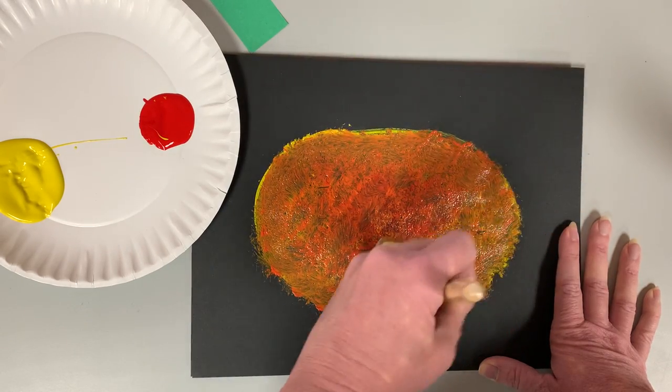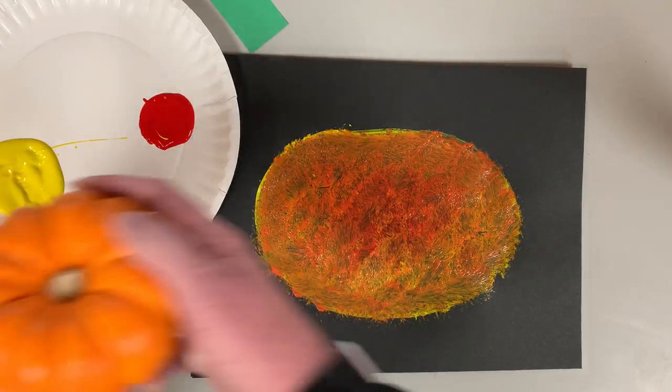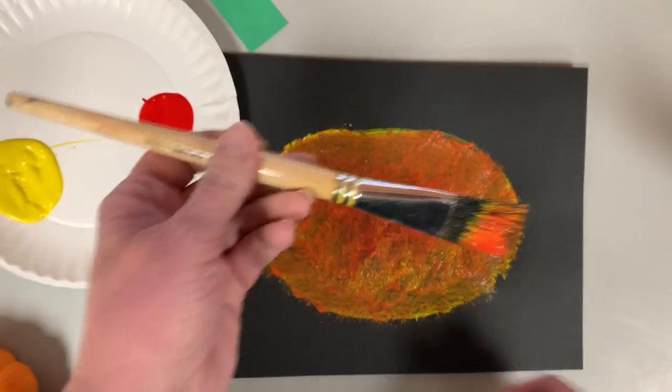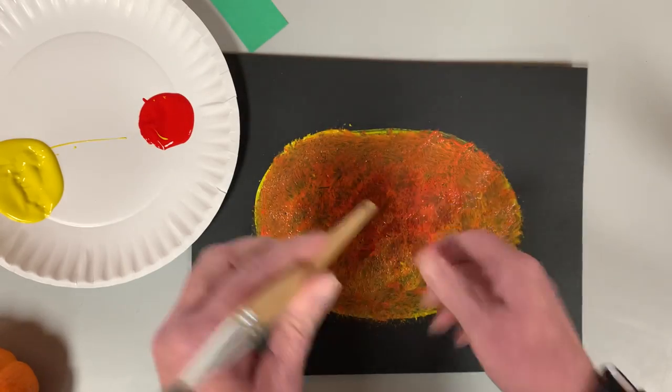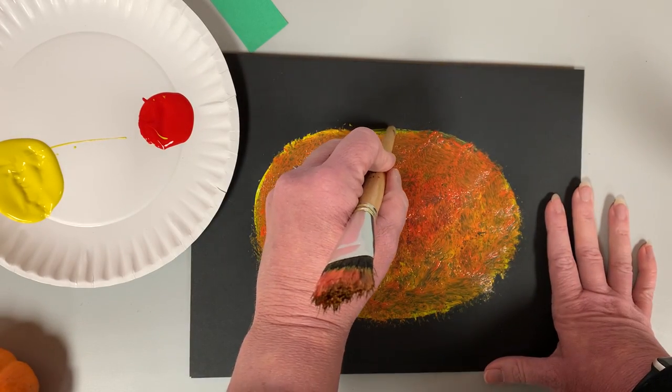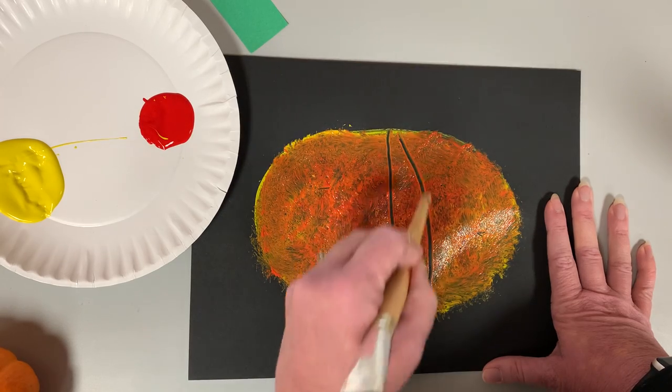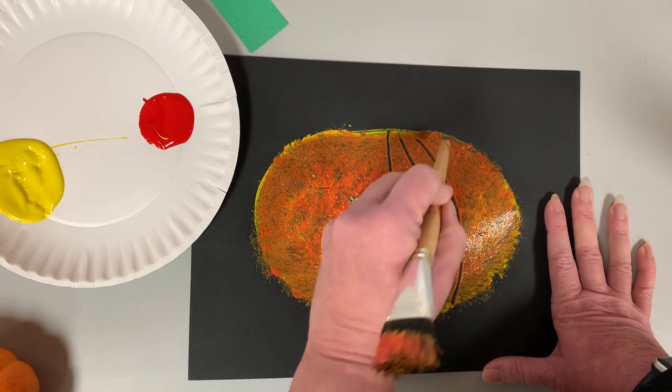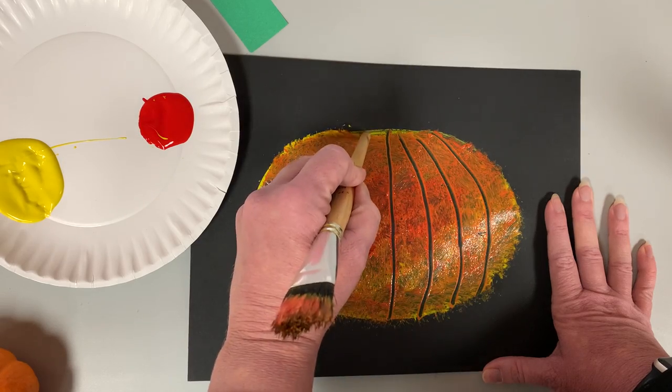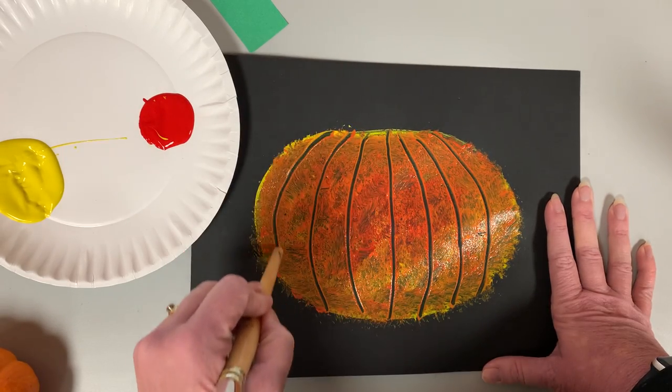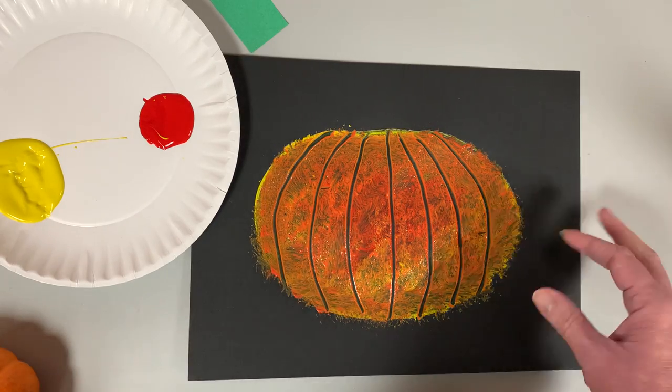If you notice on the pumpkin, the pumpkin has lines on it. We're gonna add that and when I take the brush we're gonna use the other end of our brush and while it's still wet we're gonna draw lines. Now the center one is straight down but then the lines start curving a little bit to the side and we get a pumpkin.